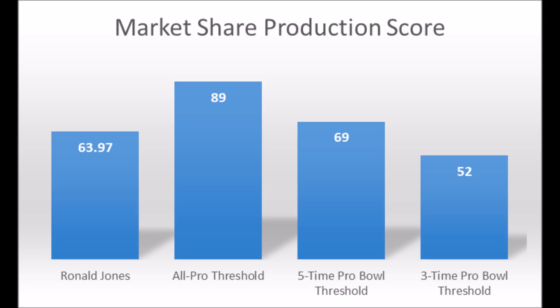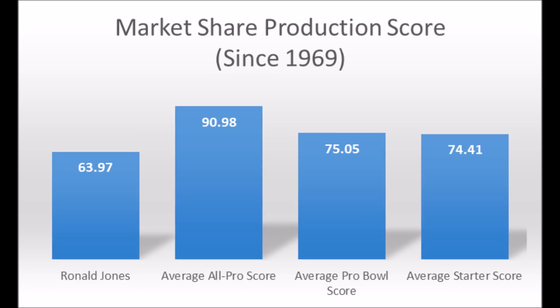Ronald Jones is pretty much above average in terms of his production. He just didn't quite hit the five-time Pro Bowl area or the all-pro area. When you look at the averages at the position, he's nowhere near the average all-pro score, not really near the average Pro Bowl score, nor even really near the average starter score. He is in the three-time Pro Bowl area, but he's a guy who's kind of on the fringes.